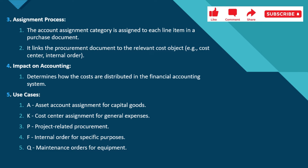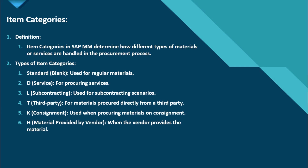It determines how the costs are distributed in the financial accounting system. The use cases are: A for asset account assignment for capital goods, K for cost center assignment for general expenses, P for project-related procurement, F for internal order for specific purposes, and Q for maintenance order for equipment. Now coming to item categories.